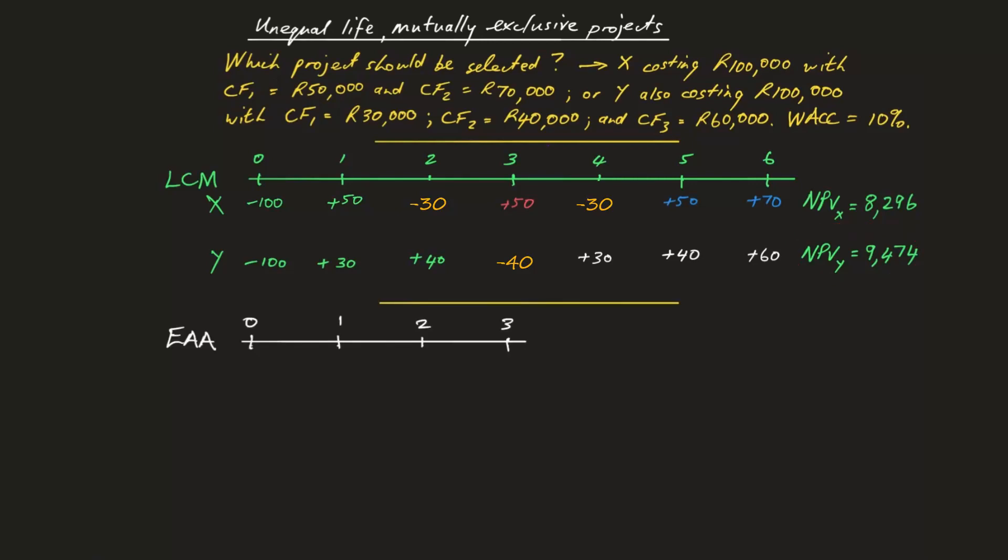The equivalent annual annuity method is carried out in two steps. Firstly, you calculate the NPV of just the first link in the replacement chain. This means that the timeline for Project X is two years long and for Y it is three years. Next, you use the NPV for each project as the present value of an equal annual cash inflow for a two-year project in the case of Project X and three years for Y.